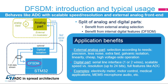The DF-SDM peripheral is a new digital peripheral inside STM32 microcontrollers. It behaves like a standard ADC with the analog part outside the microcontroller. The main benefit is to move the analog part outside and propose an internal digital part with a wide range of features. The DF-SDM represents the digital part, which is connected to the analog part through a fast serial interface.